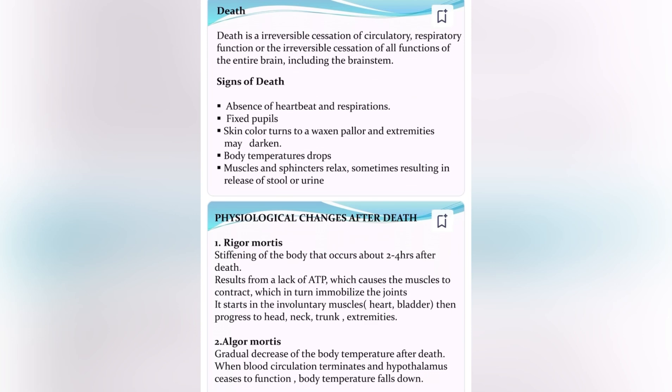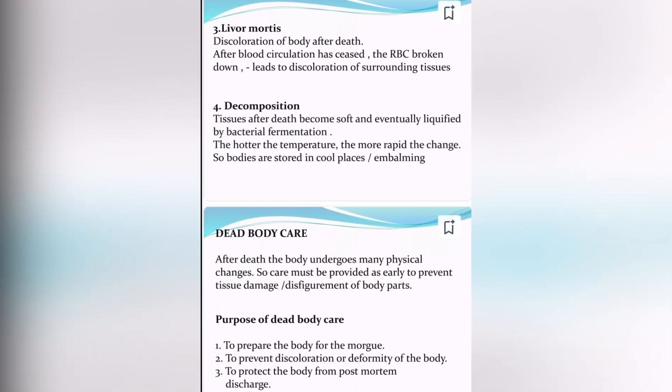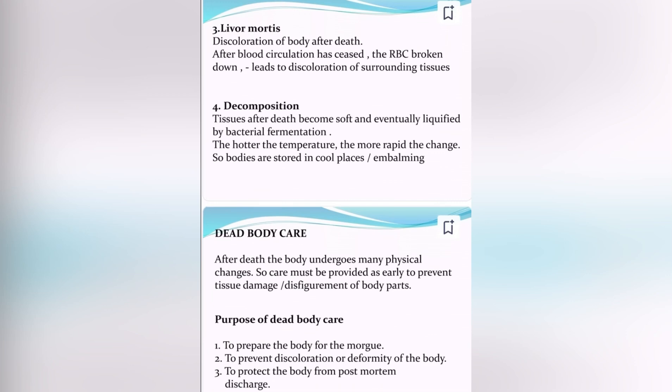Algor mortis: gradual decrease of the body temperature after death, when blood circulation deteriorates and the hypothalamus ceases to function, and body temperature falls down. Livor mortis: discoloration of the body after death. After blood circulation has ceased, the RBCs break down, leading to discoloration of secondary tissue.